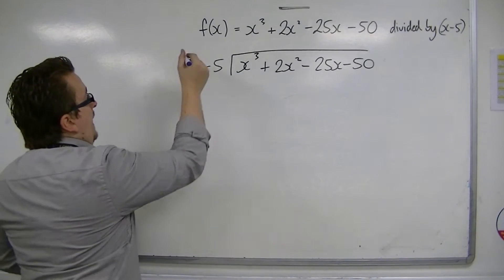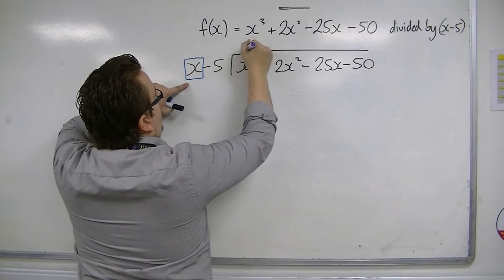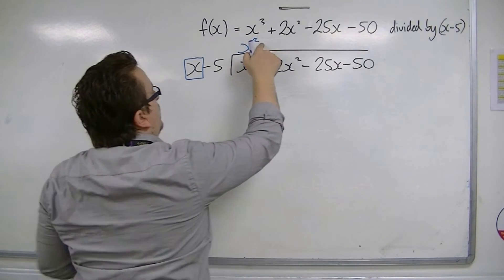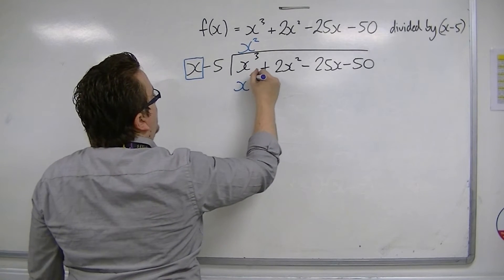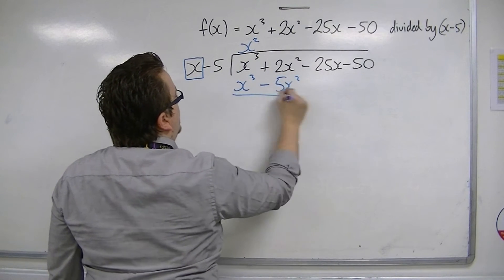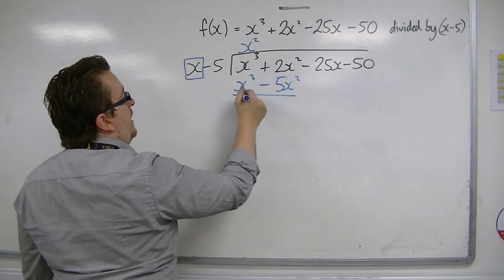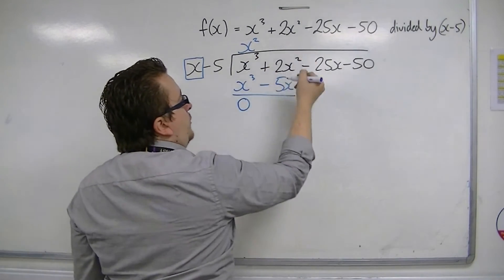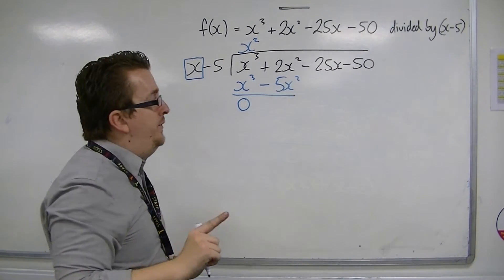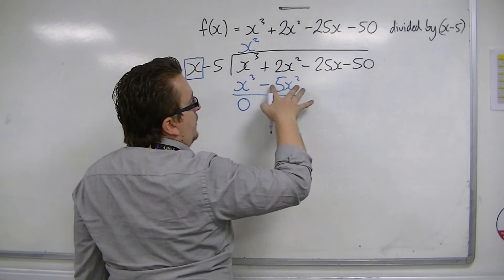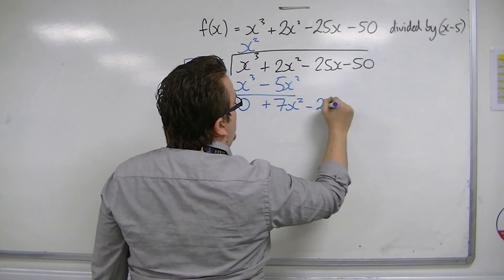So you're looking at this x. And you're going x into x cubed goes x squared. Then you multiply this new term by both of these terms, so we get x cubed take away 5x squared. Draw a line, perform a subtraction. x cubed take away x cubed is 0. 2x squared take away minus 5x squared, so be careful with the negative signs. So we take away minus 5x squared, so that's plus 7x squared. Bring the next term down.